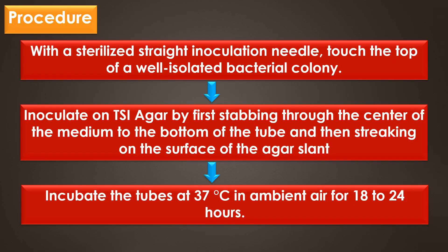Procedure. With a sterilized straight inoculation needle, touch the top of a well-isolated bacterial colony and inoculate on TSI agar by stabbing through the center of the medium to the bottom of the tube, and then streaking on the surface of the agar slant. After inoculation, incubate the tubes at 37 degrees Celsius in ambient air for 18 to 24 hours. Following incubation, examine for color change in the slant and butt, blackening, and cracks in the medium.